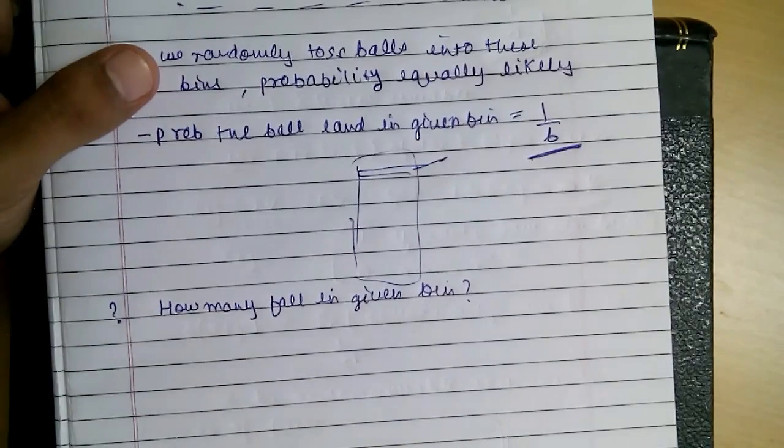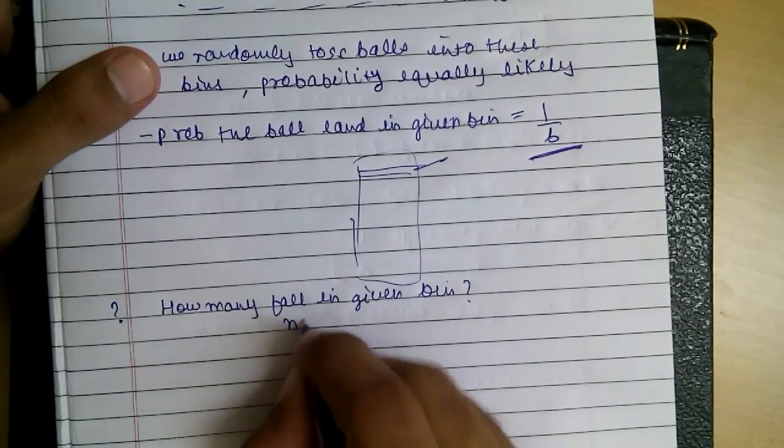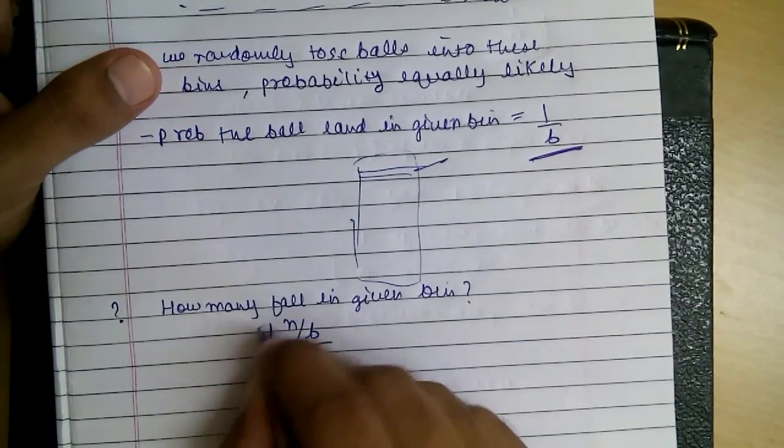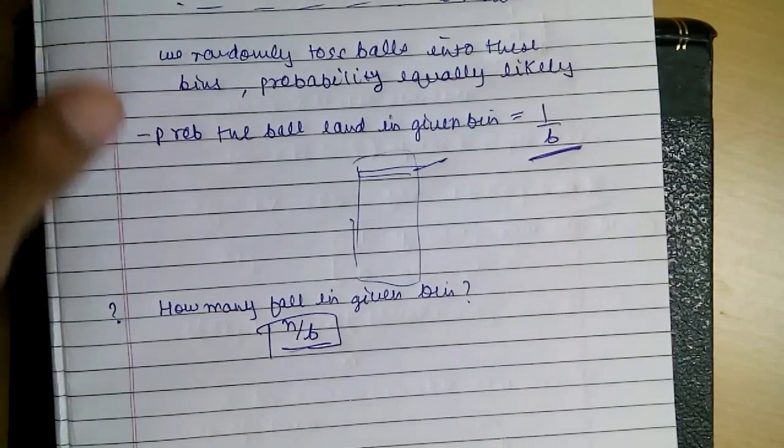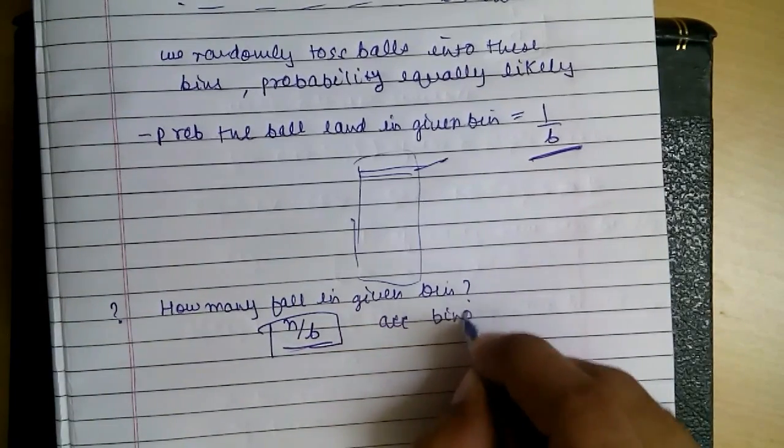According to the binomial distribution, expect with n balls, there will be n by B in a given bin, according to the binomial distribution.